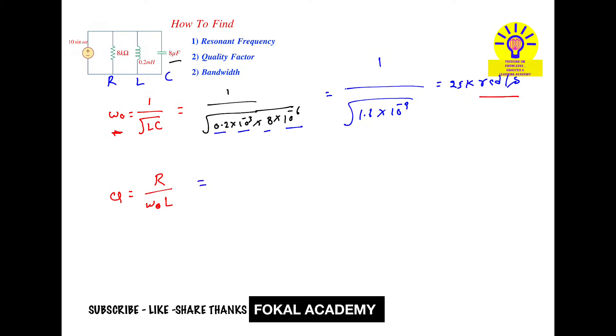Now substitute the values. R means resistor, that is 8 kilo ohms, so 8 into kilo means 10 power 3. And here L is 0.2 millihenry means 10 power minus 3. So here 10 power 3 and 10 power 3 cancel, and it gives 8 by 25 into 0.2, which is 5.